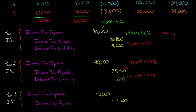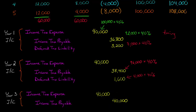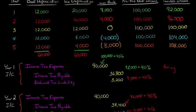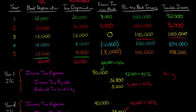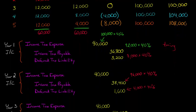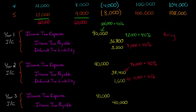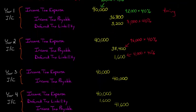In year three, there is no deferred tax liability. Income tax expense and income tax payable are exactly the same — both $40,000 — because we take the same amount of book and tax depreciation that year. Pre-tax book income and taxable income are both $100,000.